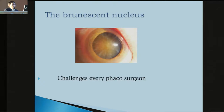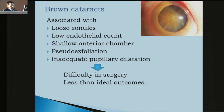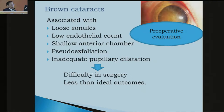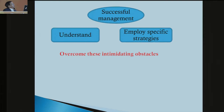Because of this type of cataract, we try to convert into SICS, but most of the time we can manage with phaco also. There are problems associated with this: loose zonules, low endothelial cell count, shallow anterior chamber, pseudo-exfoliation, and sometimes inadequate pupillary dilatation leading to difficulty in surgery. We need a thorough preoperative evaluation for successful management, understanding the situation and employing specific strategies to overcome these obstacles.